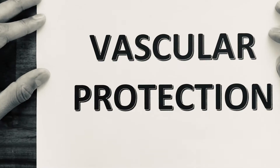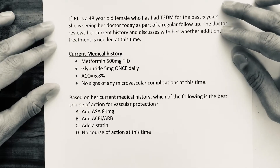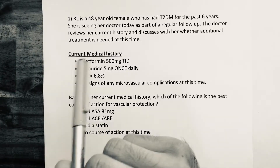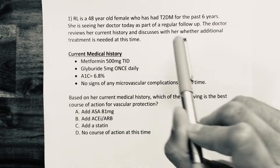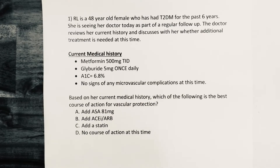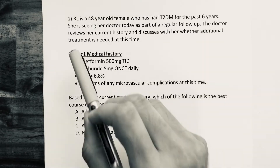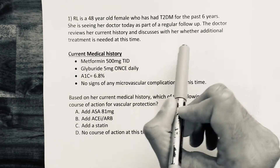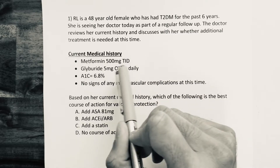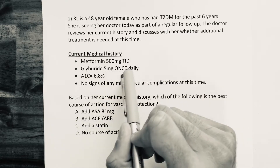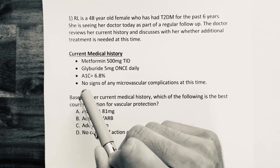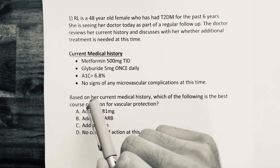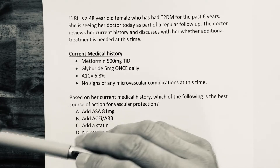In this video we'll cover vascular protection. The patient RL is a 48-year-old female who has had type 2 diabetes for the past six years. She's seeing her doctor today as part of a regular follow-up. The doctor reviews her current history and discusses whether additional treatment is needed. Current medications: metformin 500 mg three times a day and glyburide 5 mg once daily. Current A1c is 6.8%, and there are currently no signs of any macrovascular complications.